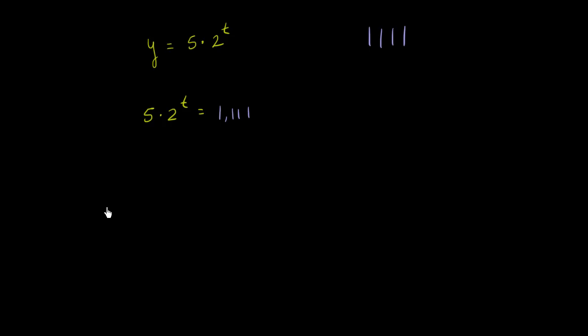So whenever we're doing anything algebraically, it's always a little bit useful to see if we can isolate the variable that we're trying to solve for. We're trying to find what t value will make this equal that. So a good first step would maybe try to get this five out of the left-hand side. So let's divide the left by five.